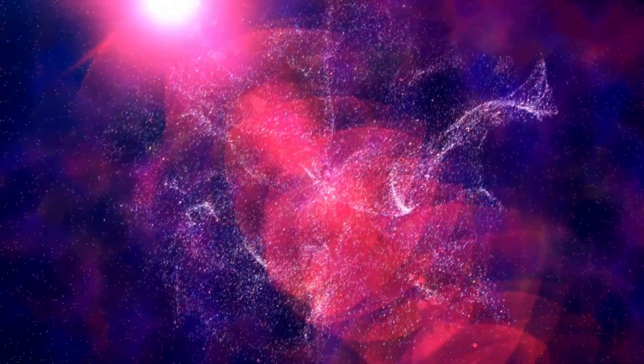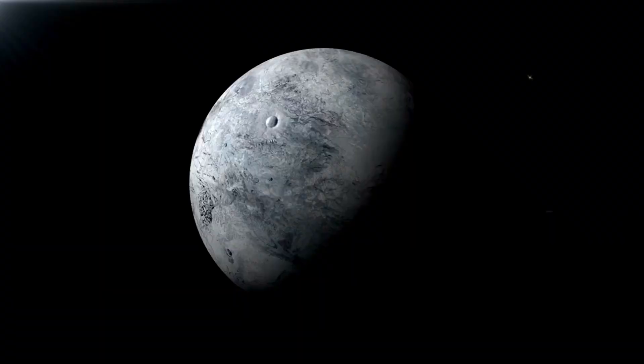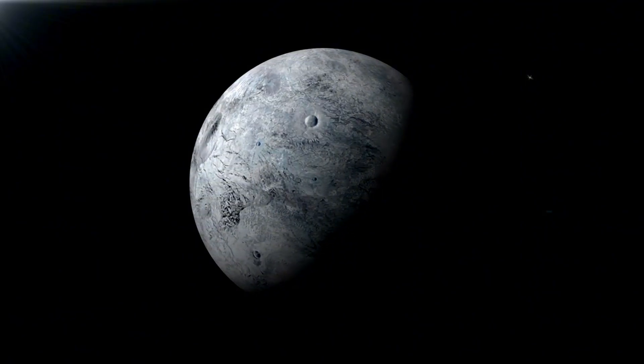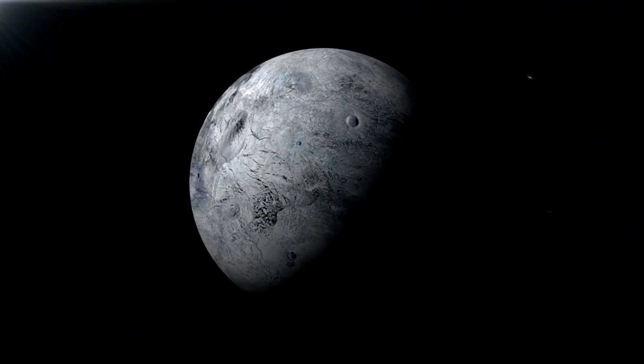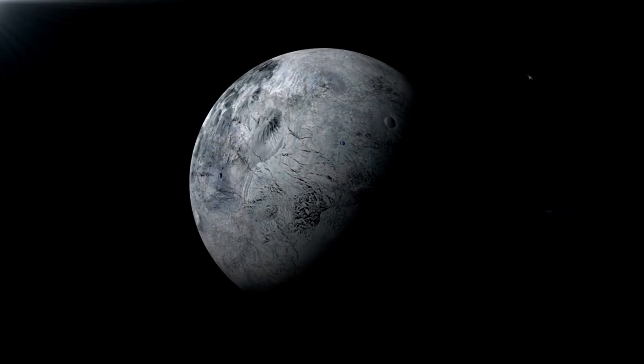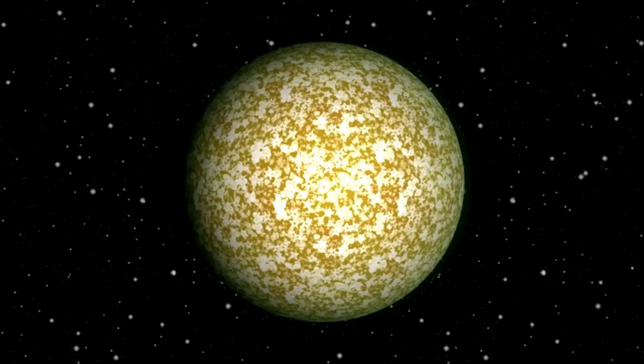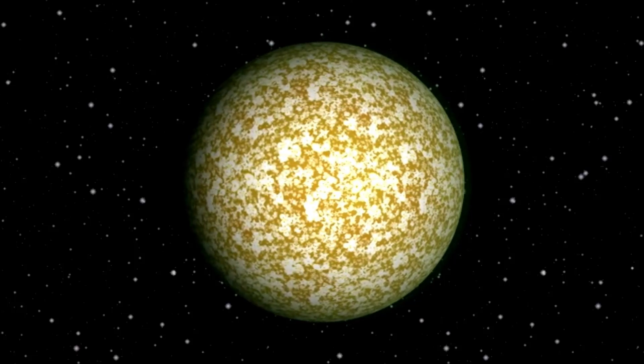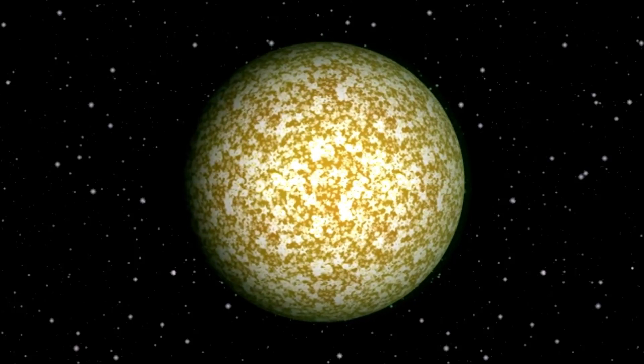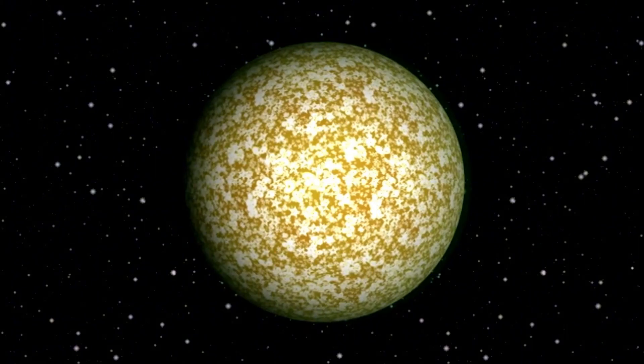Pluto's reclassification ignited a strong reaction from the public, highlighting the deep connection people felt toward this distant body. However, scientific rigor dictated that for an object to merit planetary status, it must adhere to three key criteria: orbiting the Sun, having sufficient mass to assume a nearly round shape under its gravity, and clearing its orbit of debris—criteria that Pluto ultimately failed to meet with its irregular orbital path.